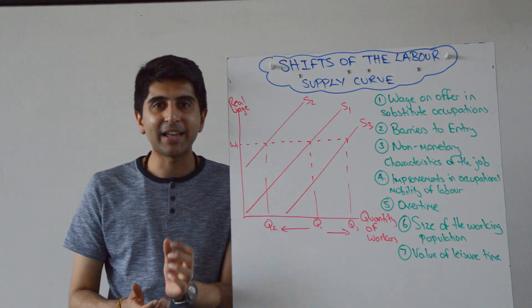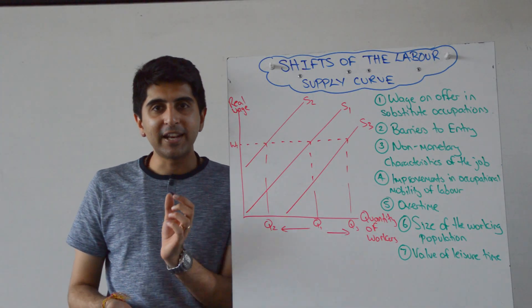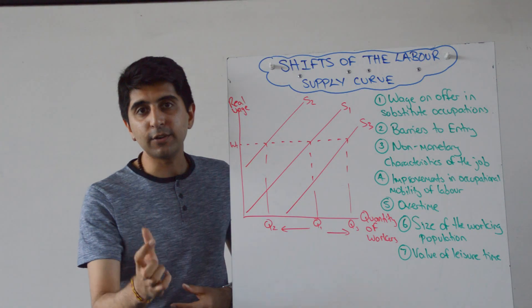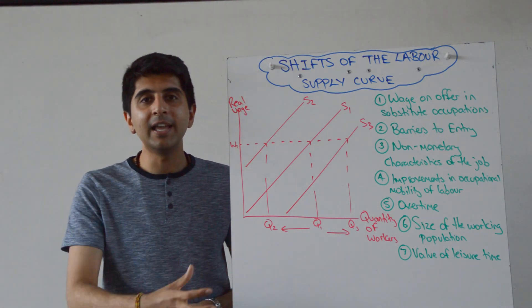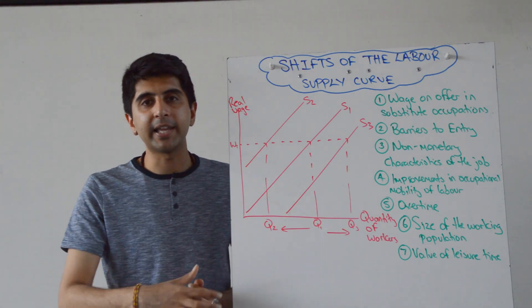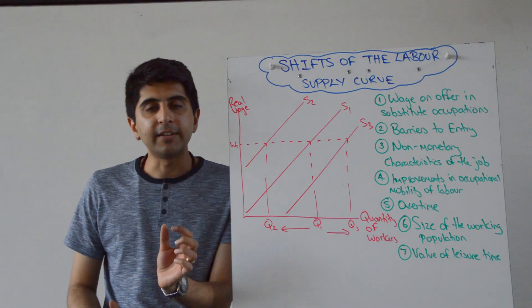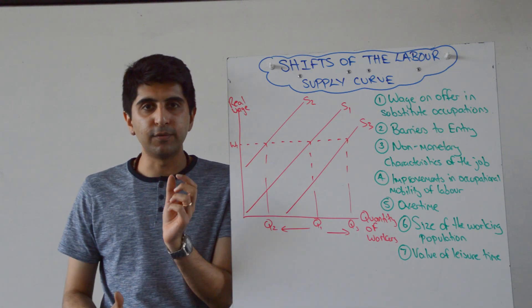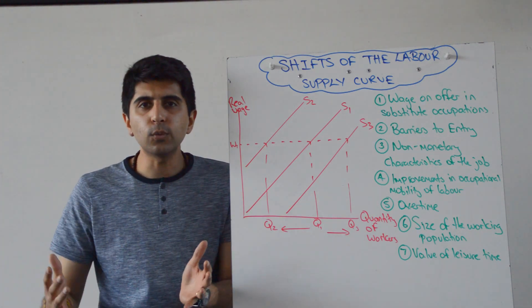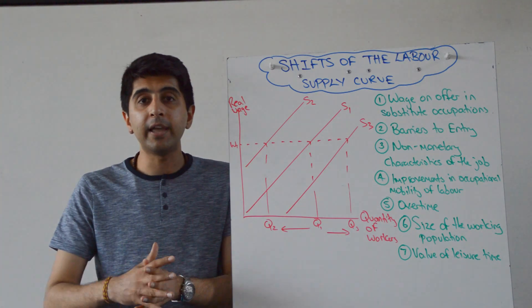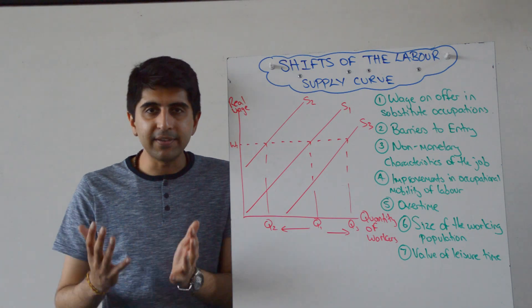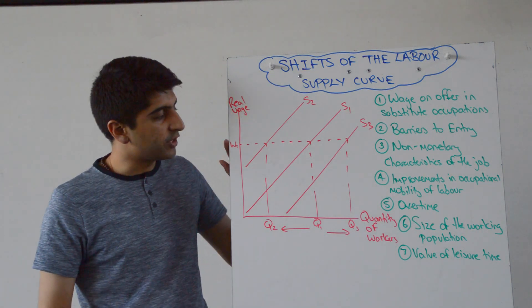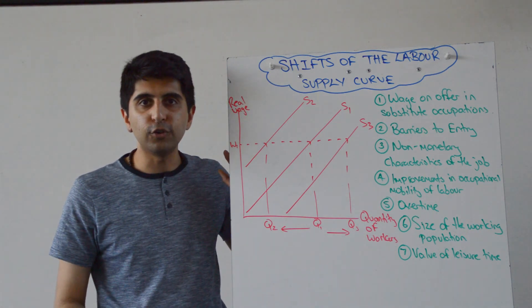Hi everybody. We learned from my last video that an increase or a decrease in wages can lead to an increase or a decrease in labour supply in the market, in the industry. But there are crucially some non-wage determinants of labour supply as well — reasons why labour supply in a given profession or occupation can increase or decrease which has got nothing to do with the wage.